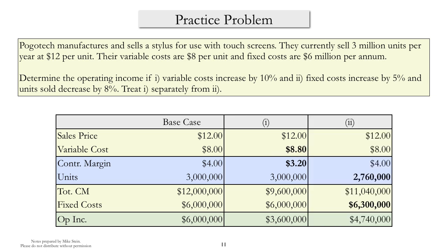In the second case, fixed costs increased by 5% and units sold decreased by 8%. The increase in fixed costs of 5% means they go from $6 million to $6.3 million. The decrease in units sold means units fall from 3 million to 2,760,000. Note that the contribution margin is back at the base case level. Operating income has gone from $6 million in the base case to $4,740,000 in this case.